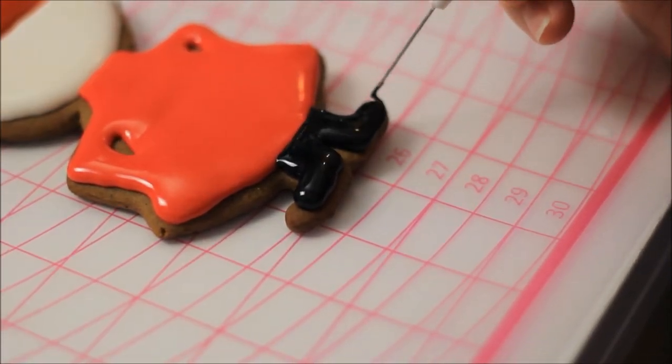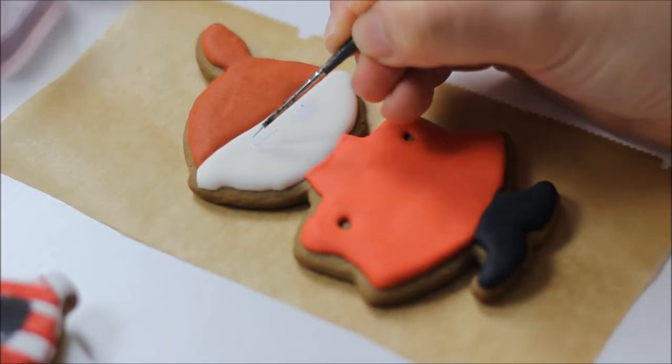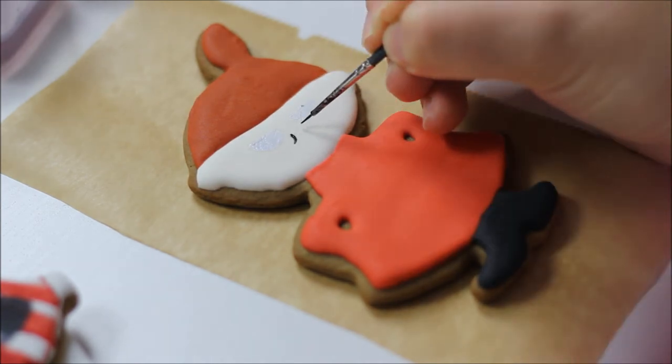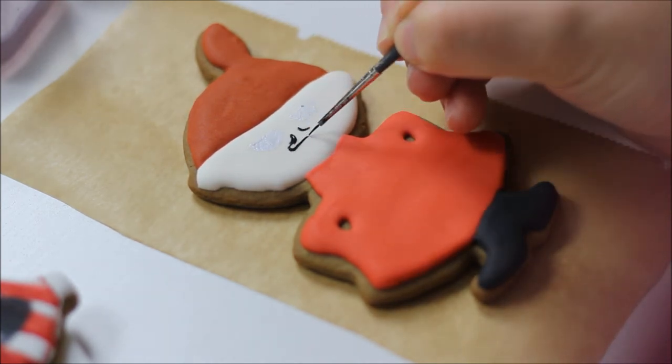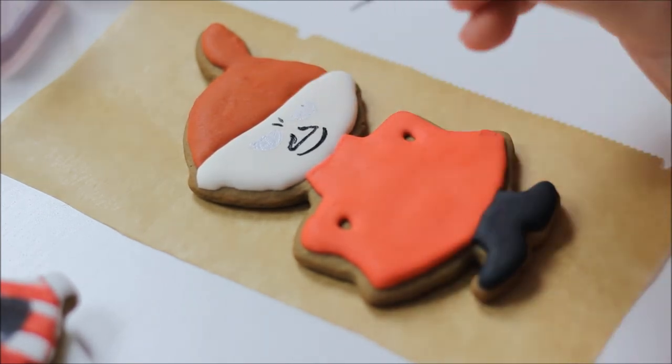Now you want the cookie to dry completely, so better proceed next day. First, outline the eyes with some white and leave them to dry. And then you can proceed making the nose, the mouth and the ears.